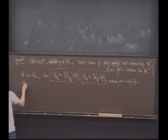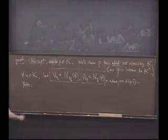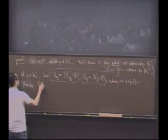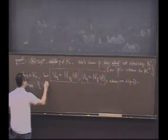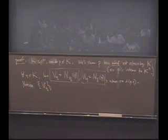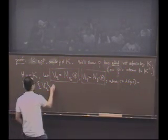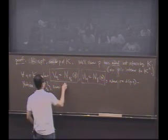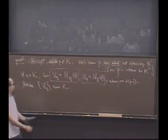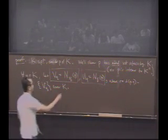And then what we'll notice is what? The V sub Q, I think this was Julian's insight, the V sub Q are what? Cover. They're an open cover of K. So by compactness...